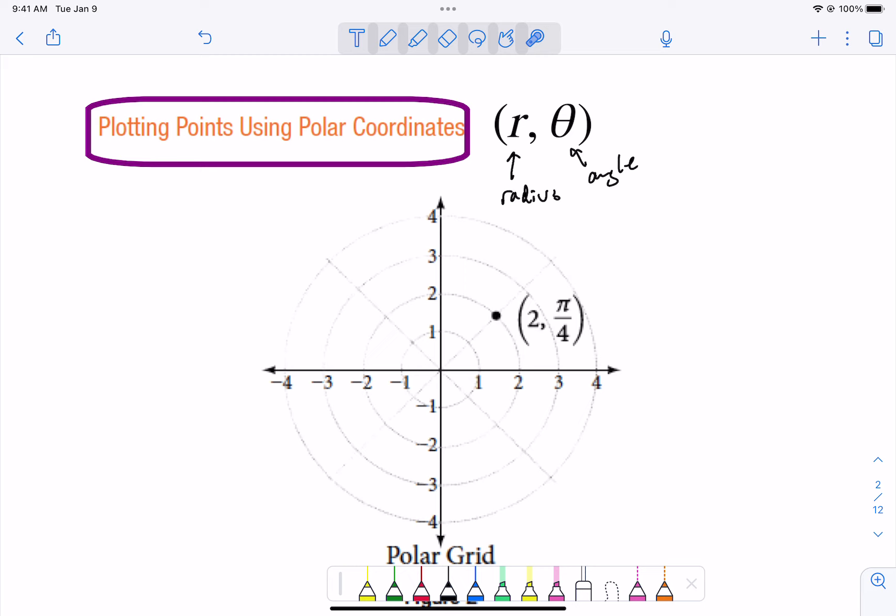You will notice that on a polar grid there's no X and Y anymore. There are rings that stand for how far out you are, your radius. It's very circular in nature. We're going to go 2 out on the pi over 4, that's 45 degrees line, so we have gone 2 out on the 45 degree line. That's the point 2 pi over 4.